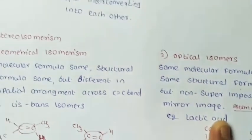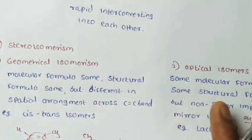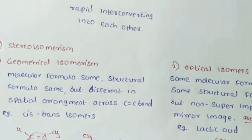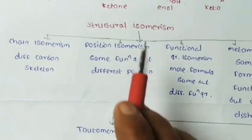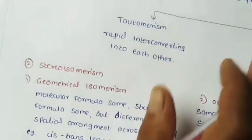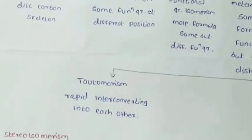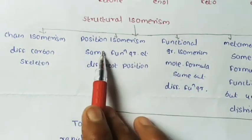Stereo isomerism has two different types: geometrical isomerism and optical isomerism. Overall, isomerism is classified into two main types: structural isomerism (with five sub-types) and stereo isomerism (with two sub-types: geometrical and optical isomerism).